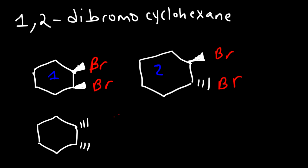Now let's change both of the chiral centers — this is compound 3. Notice that compounds 2 and 3 are diastereomers. But what about 1 and 3? Compounds 1 and 3 are meso compounds — they have an internal plane of symmetry, so these two are the same molecule. Because they are meso compounds, 1 and 3 are identical — just one single compound.